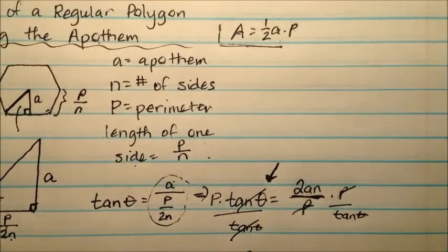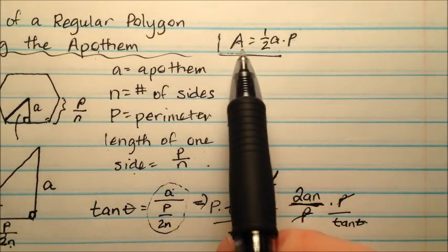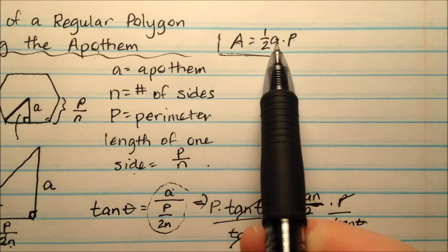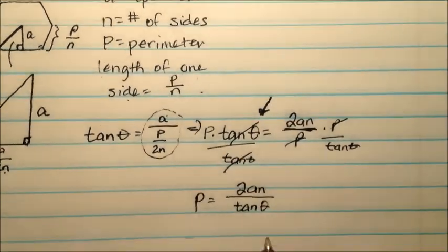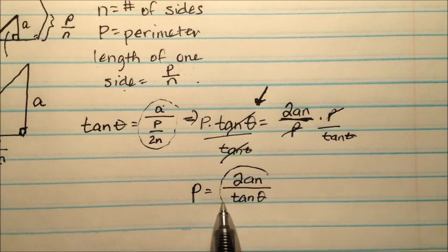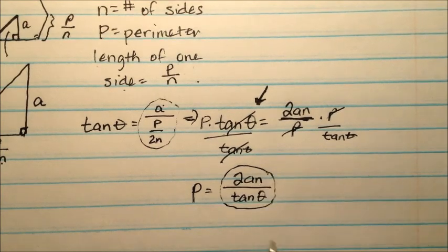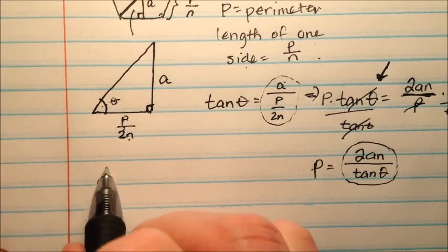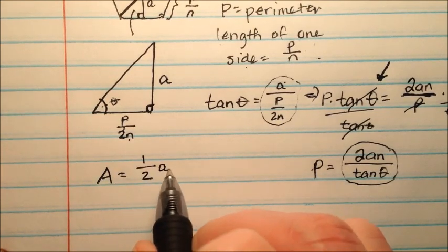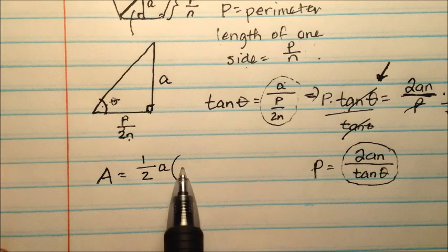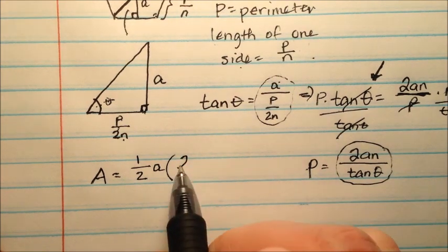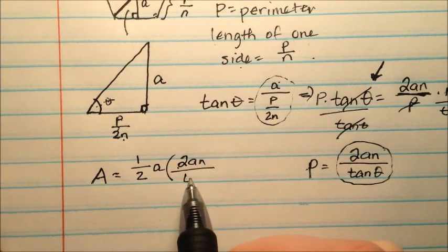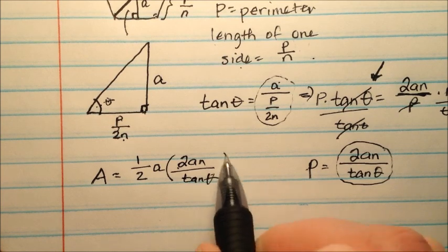I'm going to start with its original formula. Area equals one half of the apothem times the perimeter. And I'm going to substitute this stuff right here, this expression in for the perimeter. So this is what I have. The area equals one half times the apothem. And then instead of perimeter, I'm going to put this 2AN over tan theta in there.